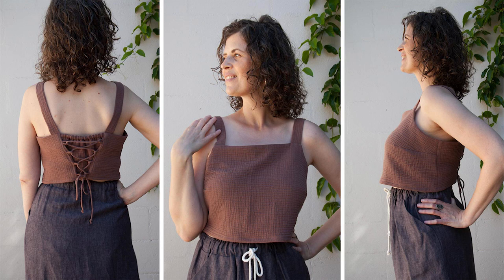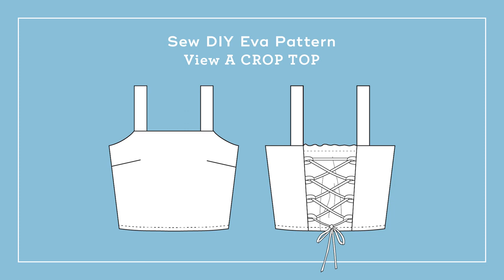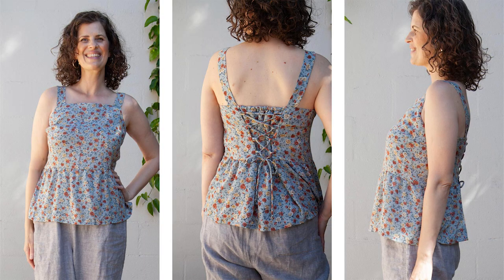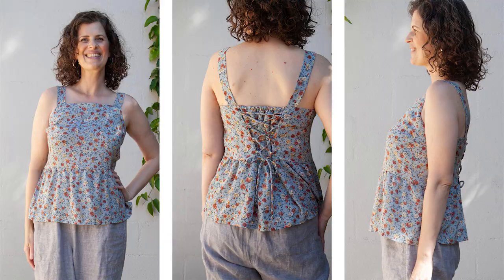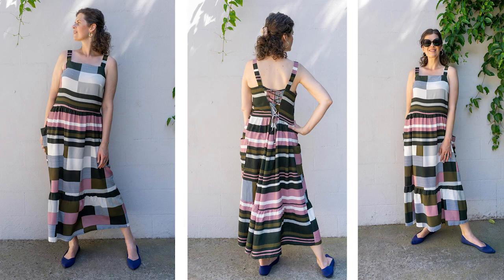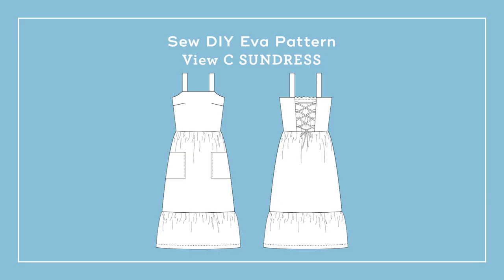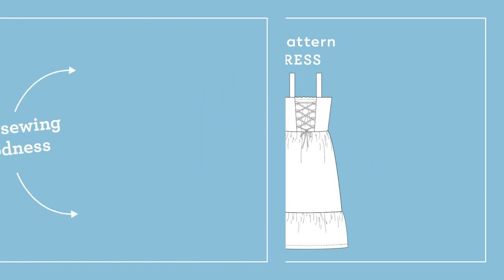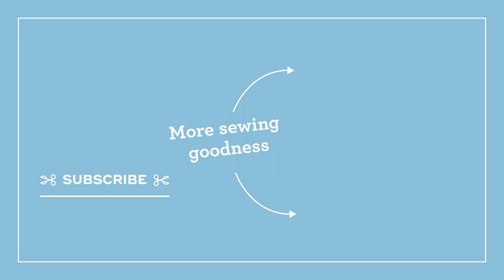All right, that's the end of part one of our video sew along for the Eva tops and sundress. If you are sewing view A you can go ahead and hem the bottom and then thread the tie through the loops in the back. If you're making the peplum top or the sundress, make sure to come back when part two is posted and we will be attaching the peplum and making our skirt with the ruffle and attaching the patch pockets. I hope that you found this video helpful. Make sure to like it and follow the channel to stay up to date on all of our new videos. Happy sewing!